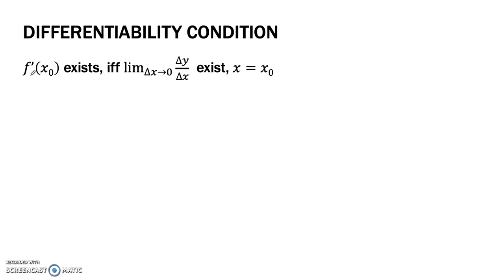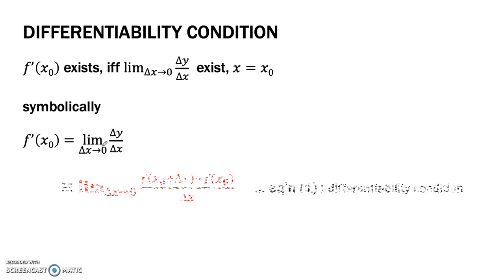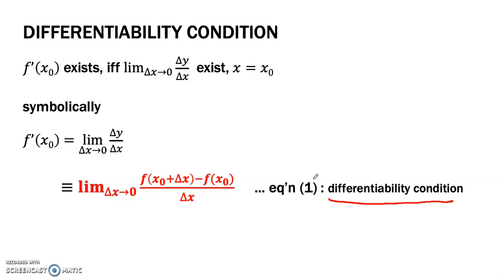To define the differentiability condition, we go back to what we discussed about the derivative. We have proven that the derivative of f at x₀ exists if and only if the limit of Δy over Δx, when Δx approaches 0, exists at x equal to x₀. We denote this limit of the difference quotient as the differentiability condition, equation 1.